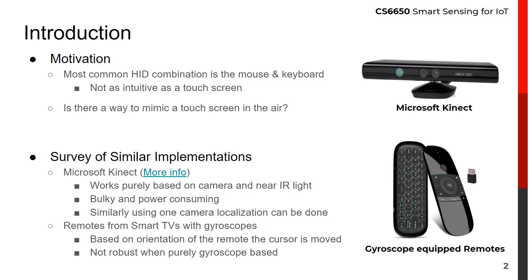We looked into similar implementations of this idea and came across two major themes. The first was the Kinect way, which uses cameras and special wavelengths of light for localization. It is not a practical alternative, as these are high-resolution cameras with frame rates not commonly found in household PCs. The second were orientation-based remotes generally packaged with smart TVs, Chromecasts, Amazon Fire Sticks, etc. Some of these cheaper implementations use only a gyroscope and hence require frequent recalibration to work properly. Such remotes are also an additional specialized component that needs to be purchased.